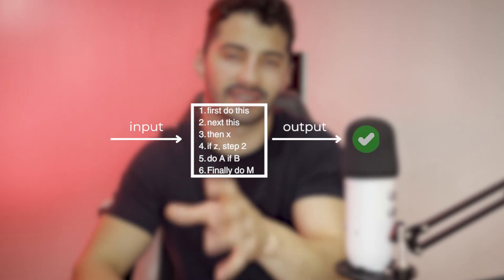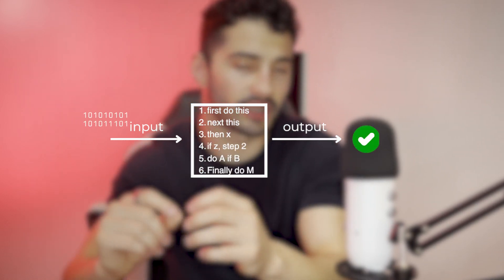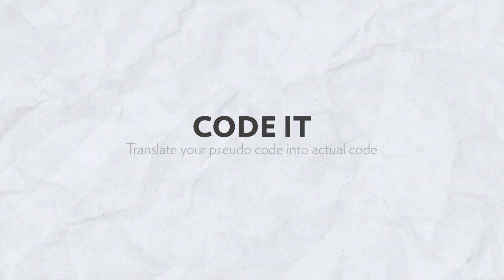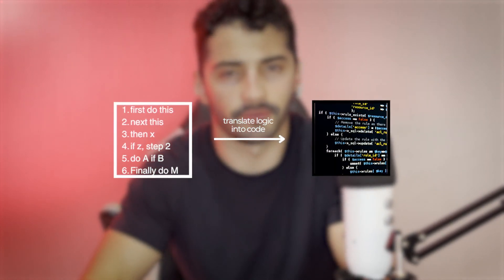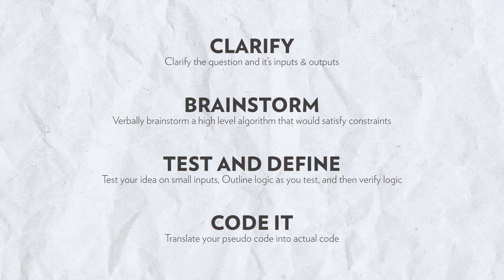Once you've tested your pseudocode on various inputs and confirmed it gives the correct output, it's time to code it. Coding is one of the first things you've learned, so at this point converting pseudocode into code should be straightforward — the harder part was coming up with the correct algorithm. As you code, keep your code clean and descriptive; consider breaking functions into smaller helper functions to show the interviewer you know how to write professional code.